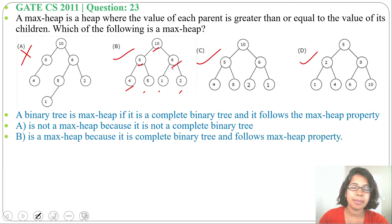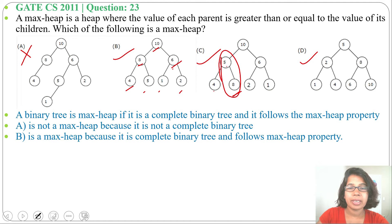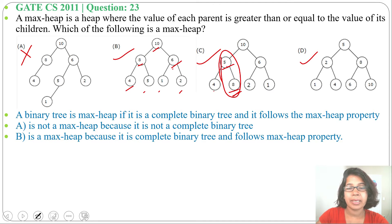Option C: 10 is greater than 5 and 6, but 5 is not greater than 8. Due to this, it is not a max-heap. Option C satisfies the shape property but does not satisfy the parental dominance property, so it is not a max-heap.